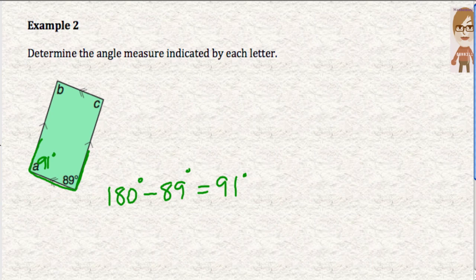Together they add up to 180. 91 plus 89 is 180. Now I can look for my diagonal values. If 91 is in the bottom corner here, angle C must also be 91. And if 89 is in the bottom right, then angle B must also be 89 degrees.